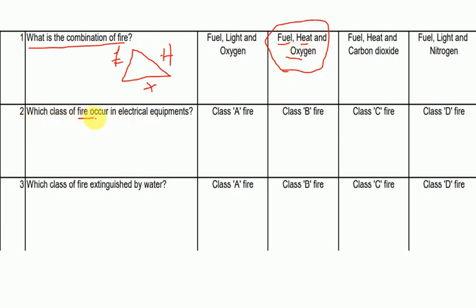Which fire occurs in electrical equipment? There are different fire classes: Class A, Class B, Class C, and Class D. Class A is general fire. Class B fire involves oils and flammable liquids. Class C fire involves metals.